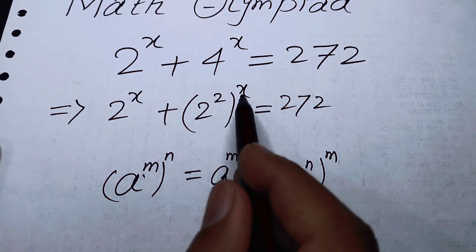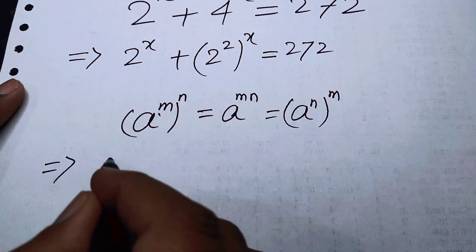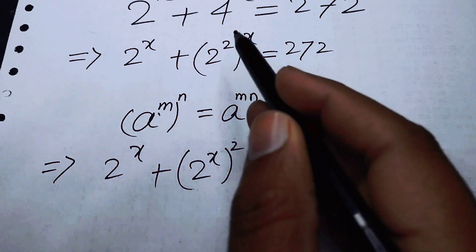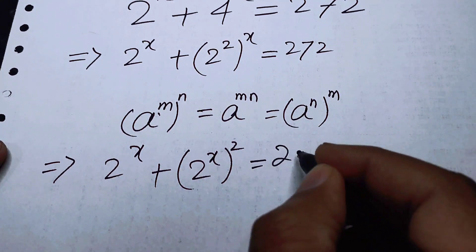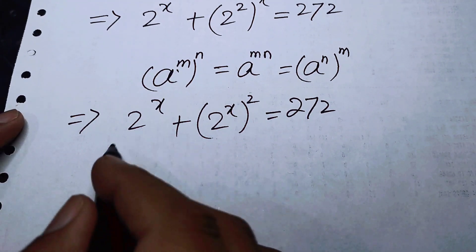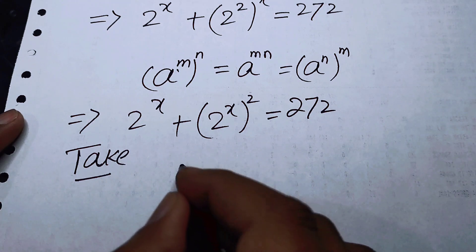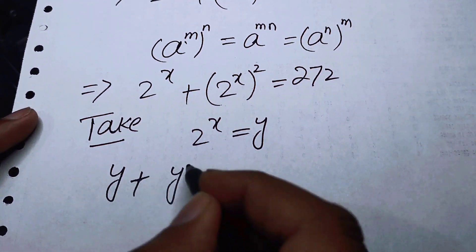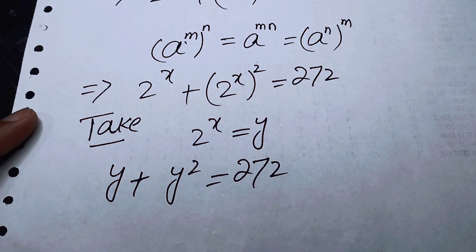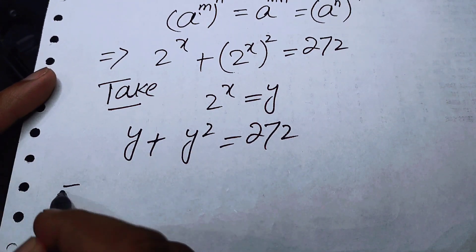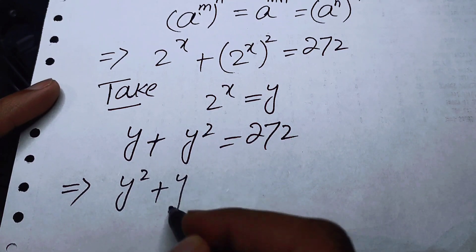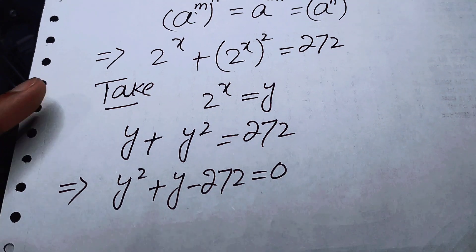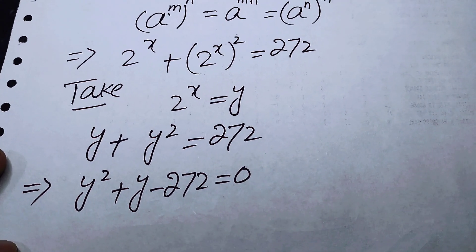So we can interchange these exponents and obtain 2 to the power of x plus (2 to the power of x) squared, equal to 272. Now we take 2 to the power of x equal to y, and the equation becomes y plus y squared equals 272. Rearranging gives us the quadratic equation: y squared plus y minus 272 equals 0.